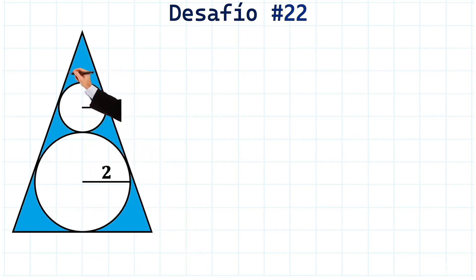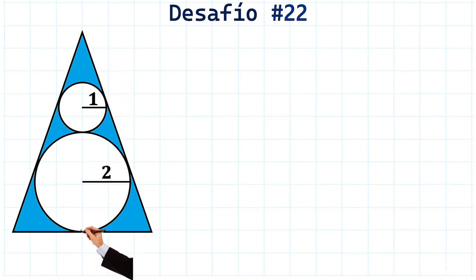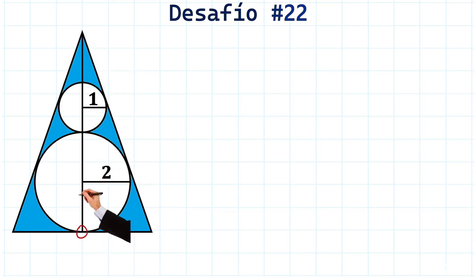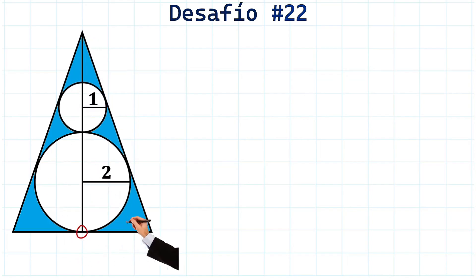Since this is an isosceles triangle, this side will be equal to this side here. We can draw a completely vertical line from this vertex down to this point here. This line is very interesting because it is a bisector, a median, a perpendicular bisector, and the height of the triangle — this only happens with isosceles triangles.